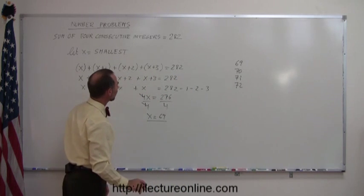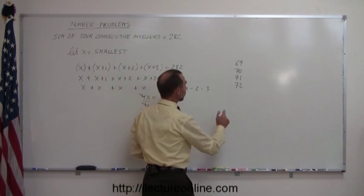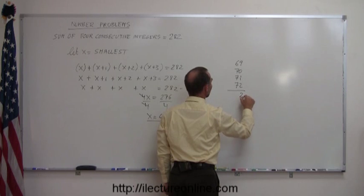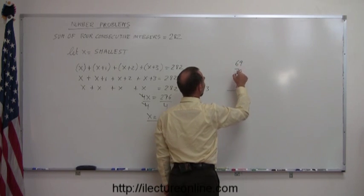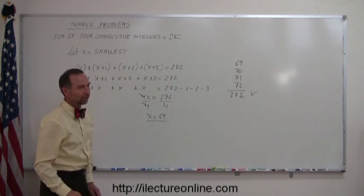Okay, now just to make sure that we did this correctly, what we could do is add them together, make sure we end up with 282, so I'm going to add them together. 9 plus 1 is 10, plus 2 is 12, that's 2, carry the 1, 7, 7, 7, 7, that's 28, and sure enough, bingo, correct answer, just to make sure.